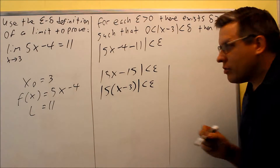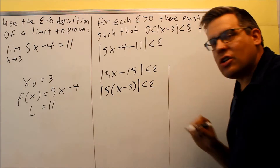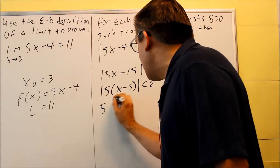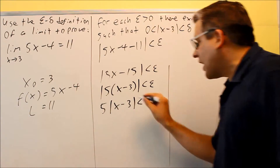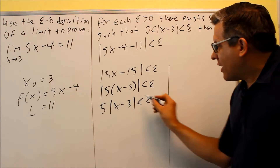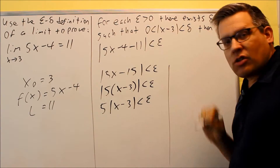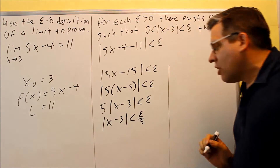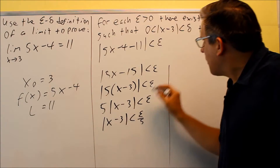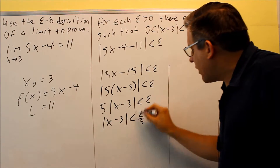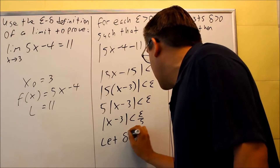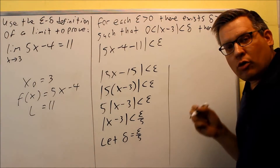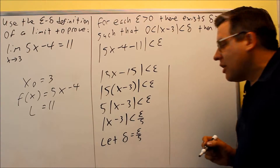Whenever you have the absolute value of two things multiplied together, you can apply the absolute value to each separately. The absolute value of 5 is just 5, so I can remove it from the absolute value. The last step is to isolate the absolute value of x minus 3 by dividing both sides by 5, giving absolute value of x minus 3 is less than epsilon over 5. This means I can make both sides match by letting delta equal epsilon over 5.